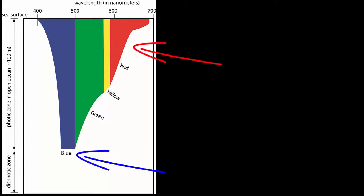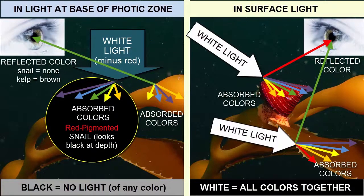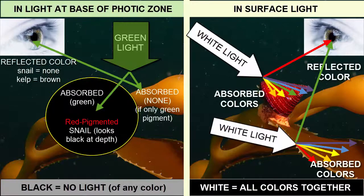Blue light remains the longest and descends the deepest before being completely absorbed. Red light is absorbed first, which means that objects with red pigment have no red light to reflect and will absorb all available light, appearing black. This is a strategy used by organisms living in the lowest areas of the photic zone — by having red pigment they appear black and fade into the surrounding darkness.